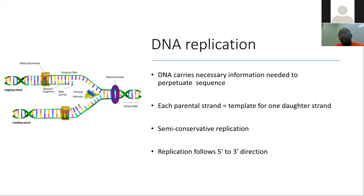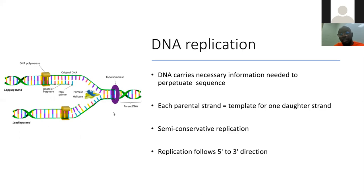In DNA replication, replication follows a 5' to 3' direction. For replication to begin, topoisomerase removes the positive supercoil nature of the DNA. Then helicase breaks the bonds between the bases, and once the strands are single and isolated, helicase recruits primase, which lays down a primer that DNA polymerase extends. The key rule is that the direction of replication proceeds from 5' to 3'.